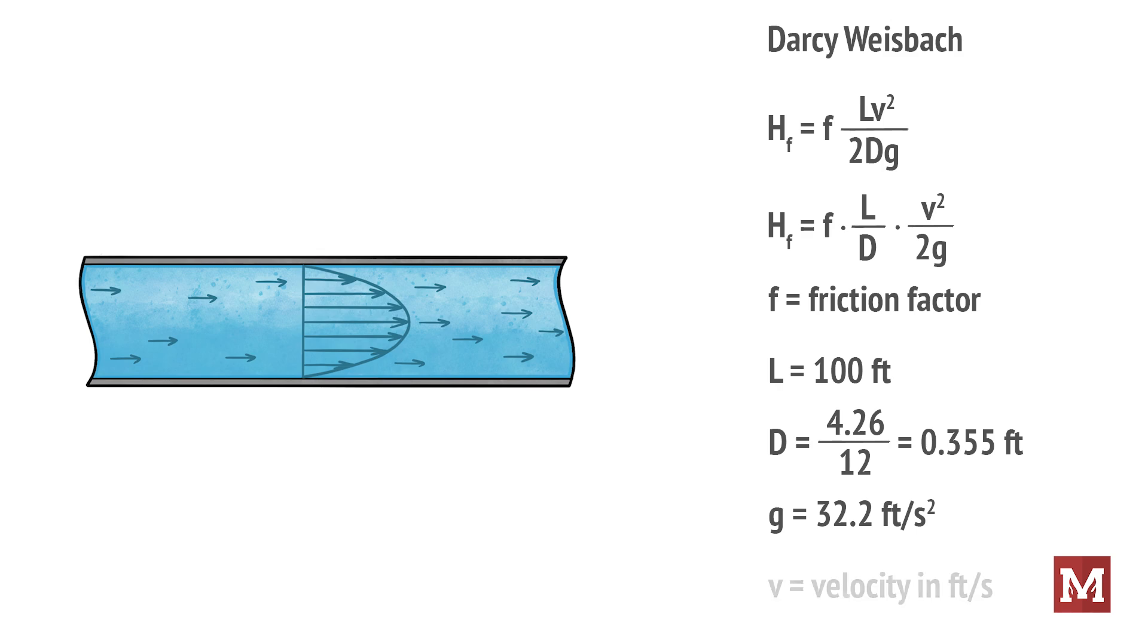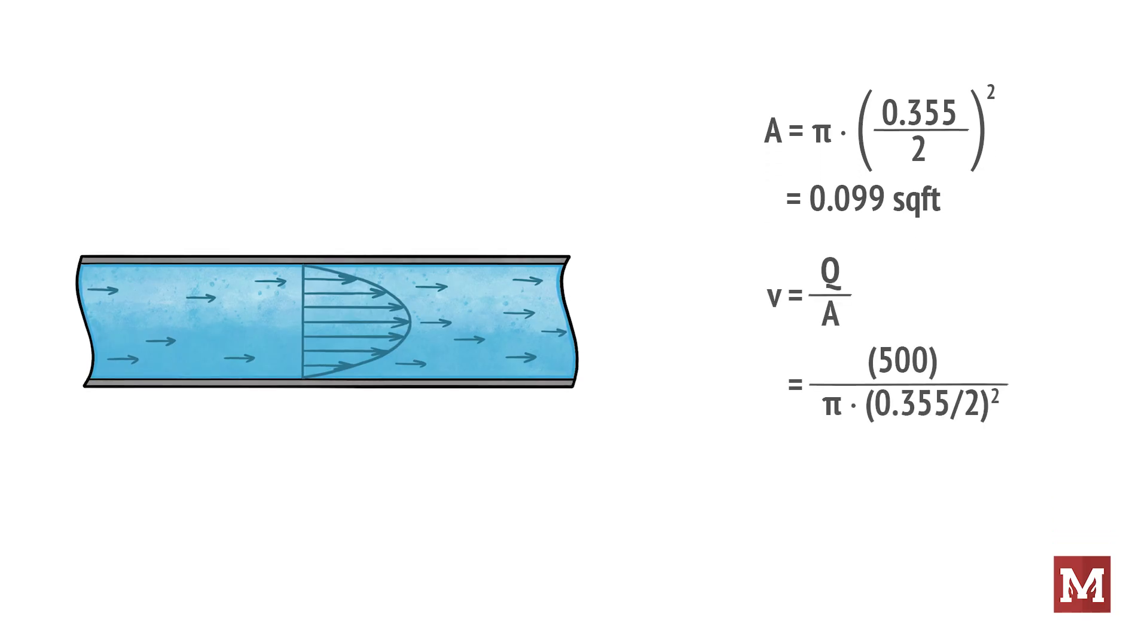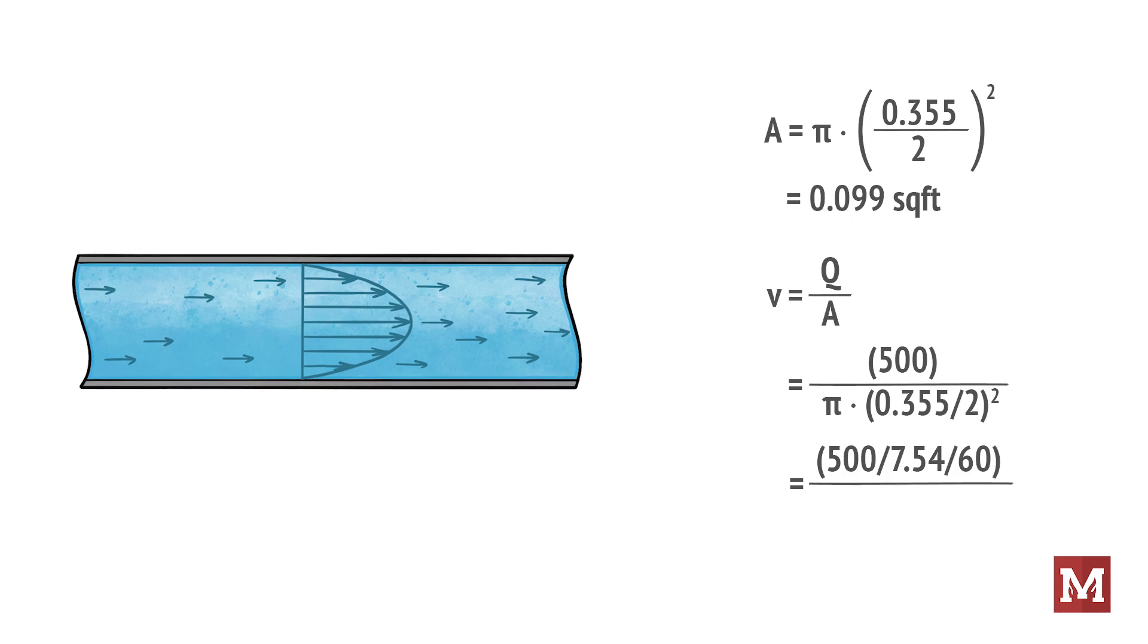We need to solve for the velocity of the water in terms of feet per second. So if we take the area of the pipe, pi times 0.355 divided by 2 squared, we get 0.099 square feet. The flow of water in the pipe at 500 gallons a minute is converted to cubic feet per second by multiplying the 500 gallons per minute by the reciprocal of 7.54 and then divide once again by 60 seconds per minute. That divided by the area that we just calculated, 0.099, gives 11.17 feet per second.